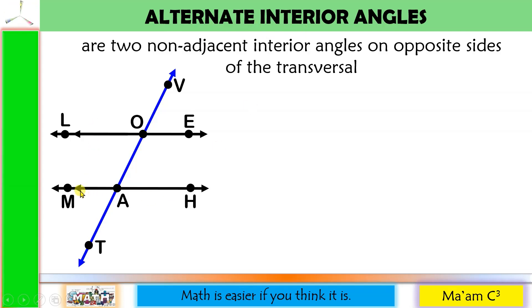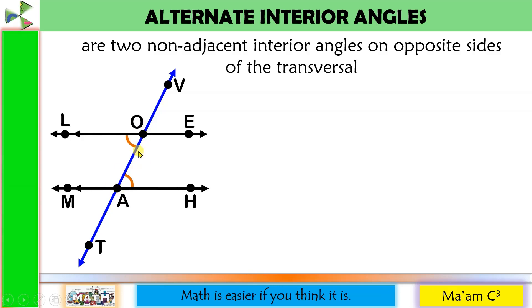Here are parallel lines. Notice these arrowheads — it means they are parallel. This portion is the interior. When we say alternate, one is on the left and one on the right. So let us get an angle on the left side that is in between these two lines. Its partner should be on the other side because alternate, but still in between these two lines. So angle LOA and angle OAH are alternate interior angles and they are congruent.